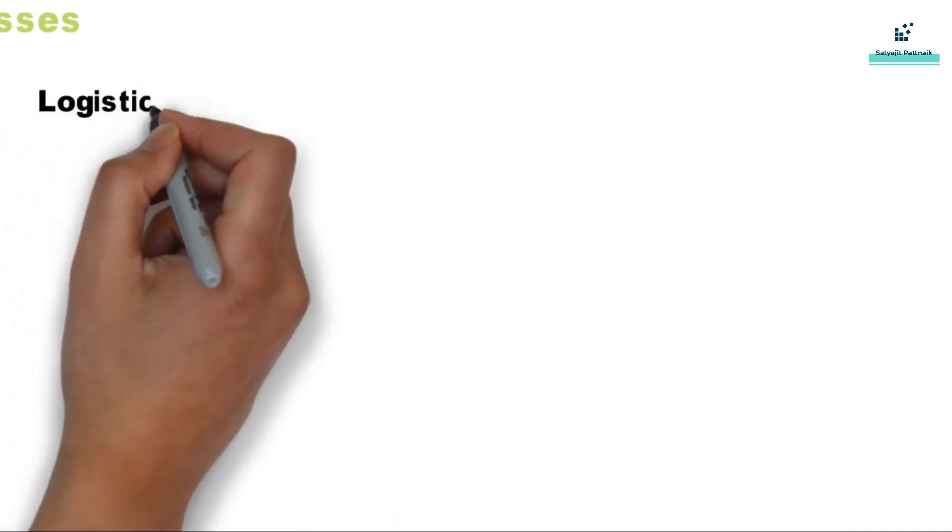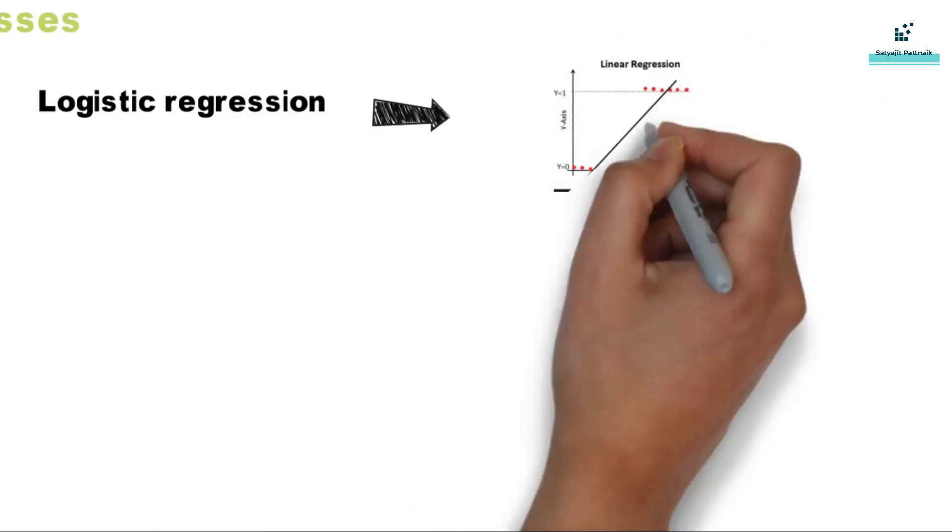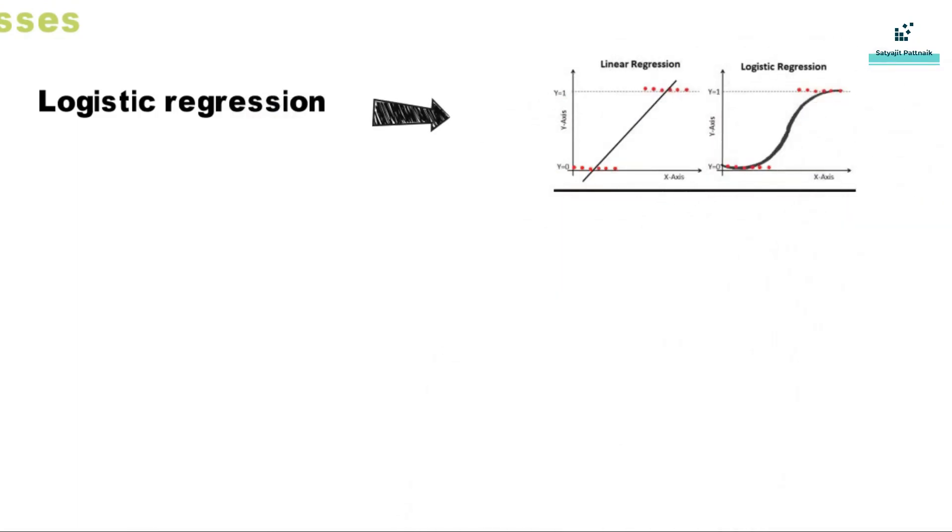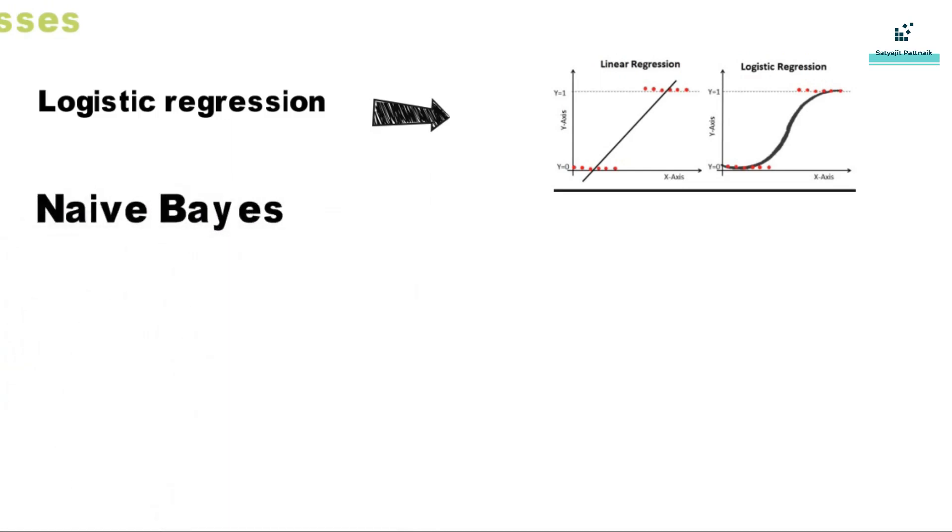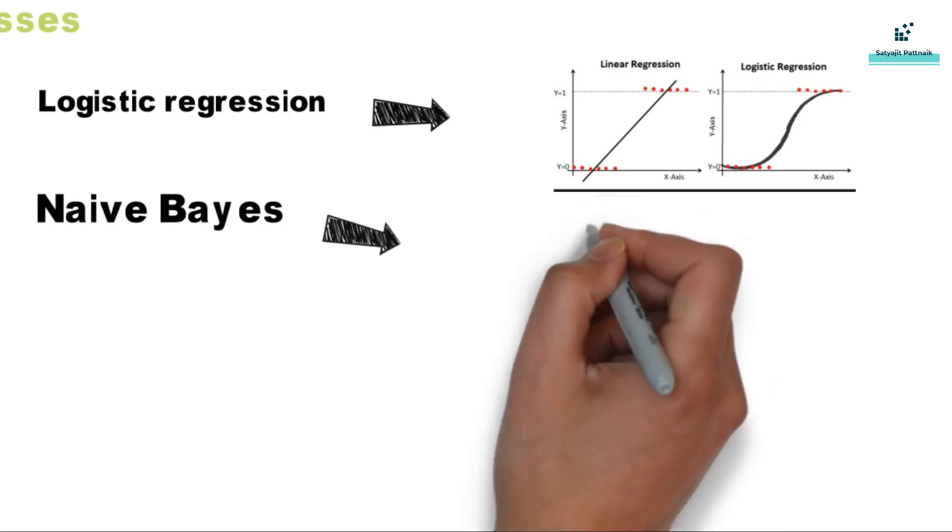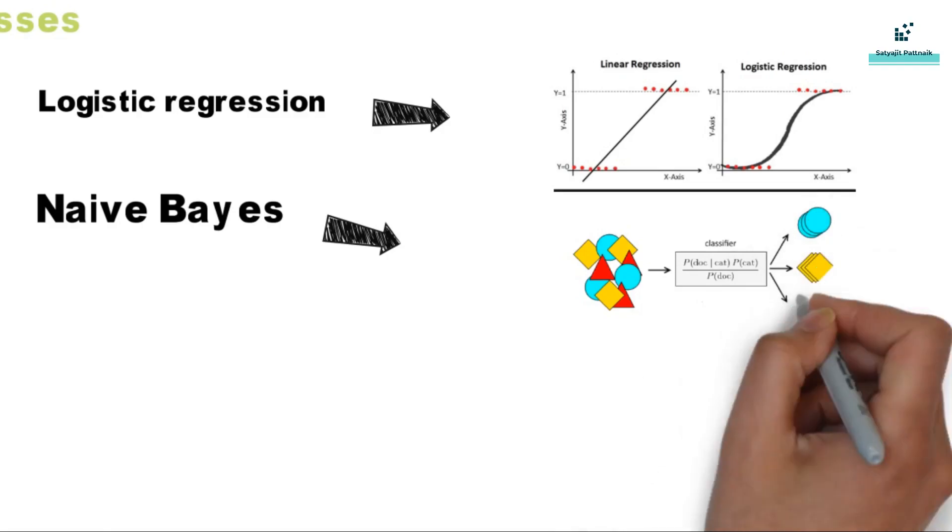Some of the most common classification algorithms are logistic regression, which is similar to linear regression but is used to find the probability of a finite number of outcomes, typically two. Next we have Naive Bayes. This is a probabilistic classifier based on applying Bayes theorem with strong independence assumptions between the features.